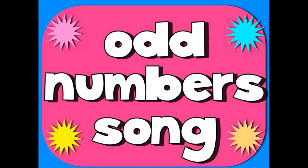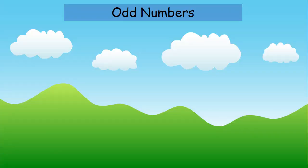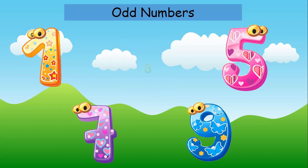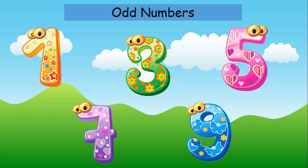Now we will sing odd numbers song. Are you ready to sing odd numbers song? Let's sing. Let's sing the odd numbers. They are numbers we should know and they are called the odd. 1, 3, 5, 7, 9. 1, 3, 5, 7, 9. 1, 3, 5, 7, 9. And these numbers are the odd.